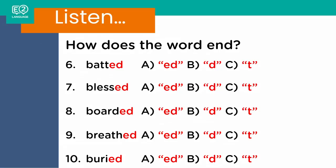Let's look at the answers for six to ten. We had 'battered' — ed. Number seven, 'blessed' — t. Number eight, 'boarded' — ed. Number nine was kind of tricky: 'breathed' — if you had t, it almost sounds like 'breathed,' but no, it's a d sound. Number ten is 'buried' — d. How's it going so far? Hopefully you're picking up the differences between the ed, d, and t sounds on the ends of these words.